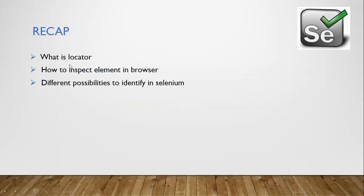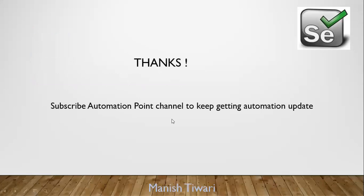I hope you are clear on the different possibilities to identify elements in Selenium. To recap: we discussed what a locator is, and how to inspect elements in Firefox using either the development tools or the Firebug plugin. We also covered the different strategies to identify web elements by ID, name, class name, tag name, link text, partial link text, CSS selector, and XPath. Thank you so much — please subscribe to the Automation Points channel to keep getting automation updates!